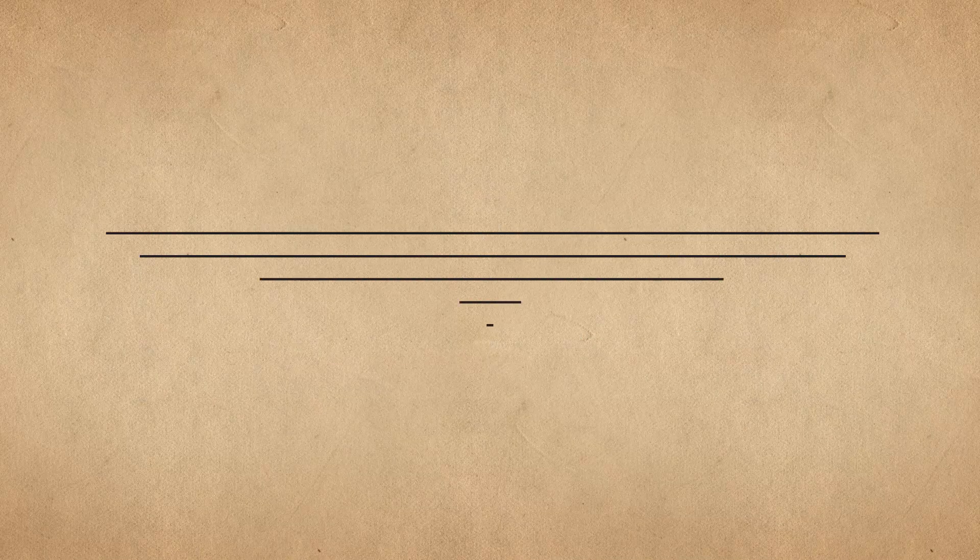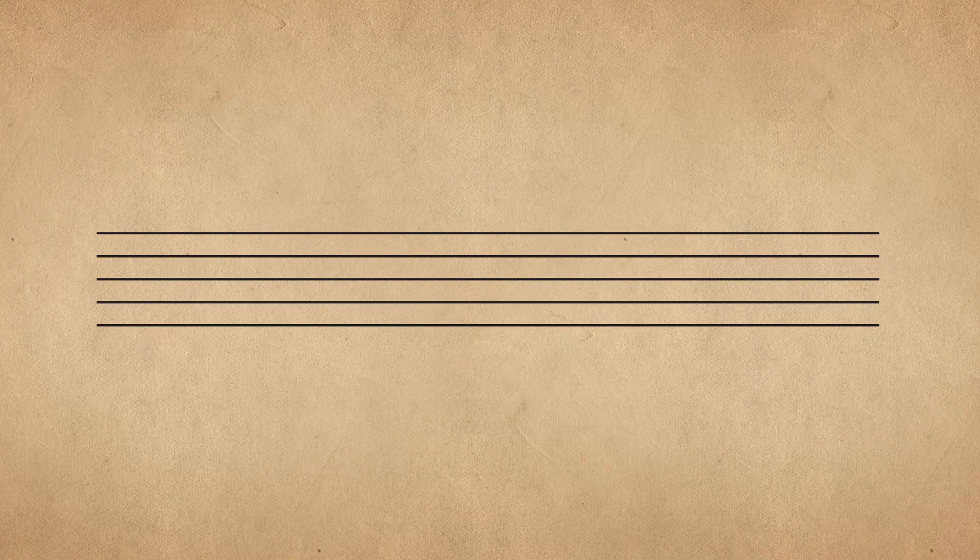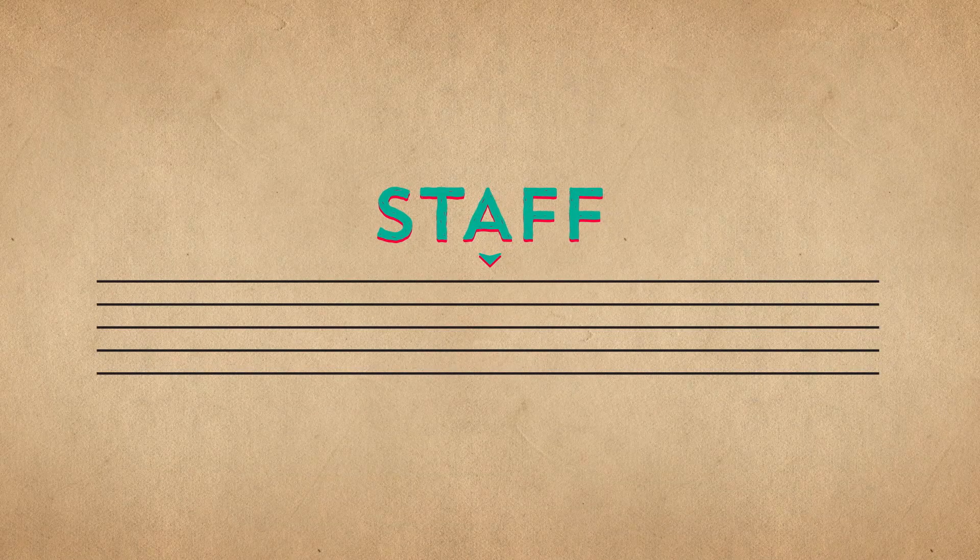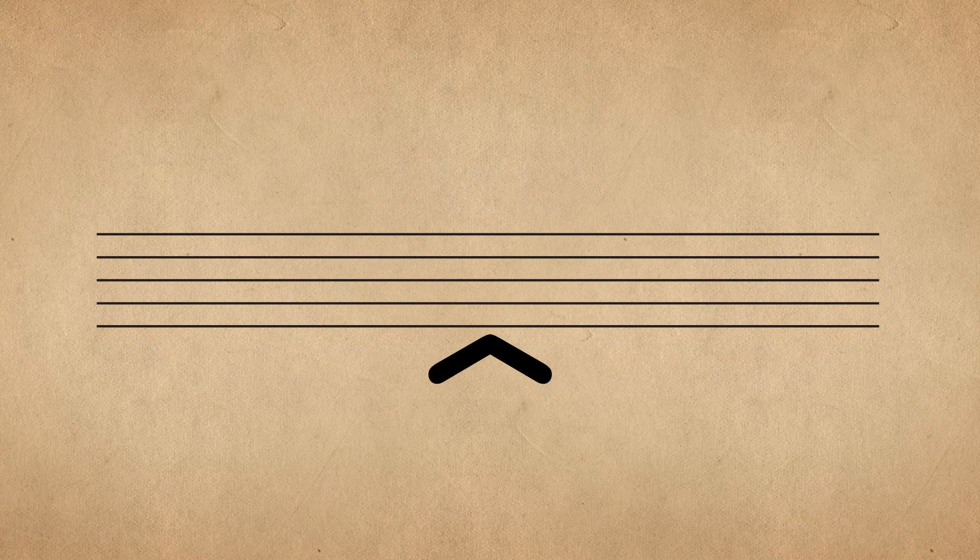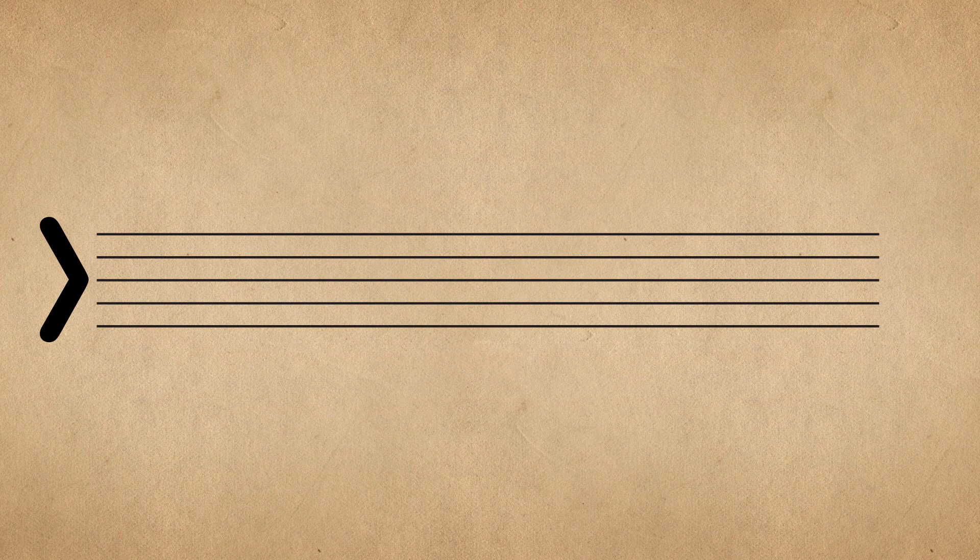Music is written on five parallel lines that go across the page. These five lines are called a staff, and a staff operates on two axes – up and down and left to right.